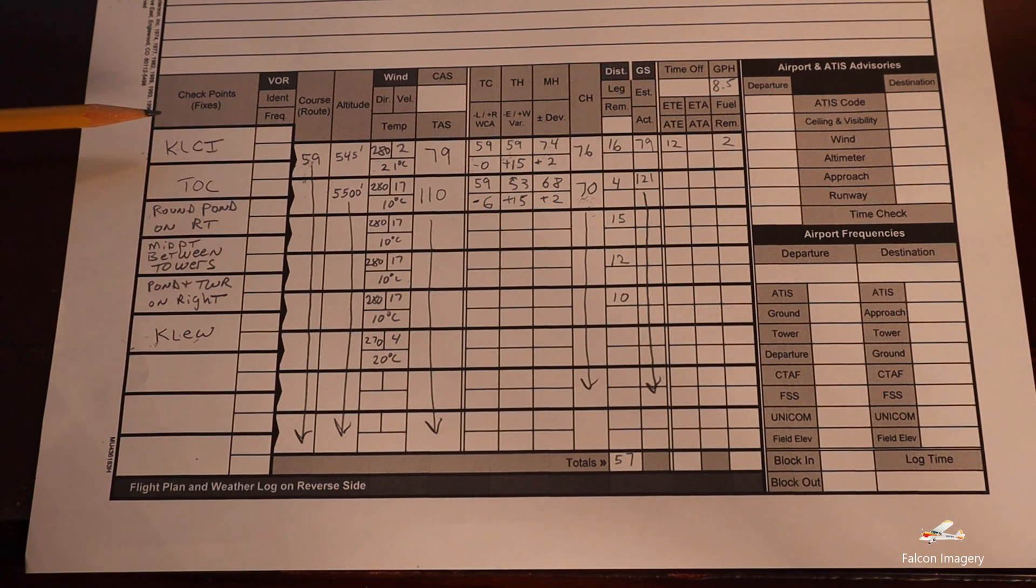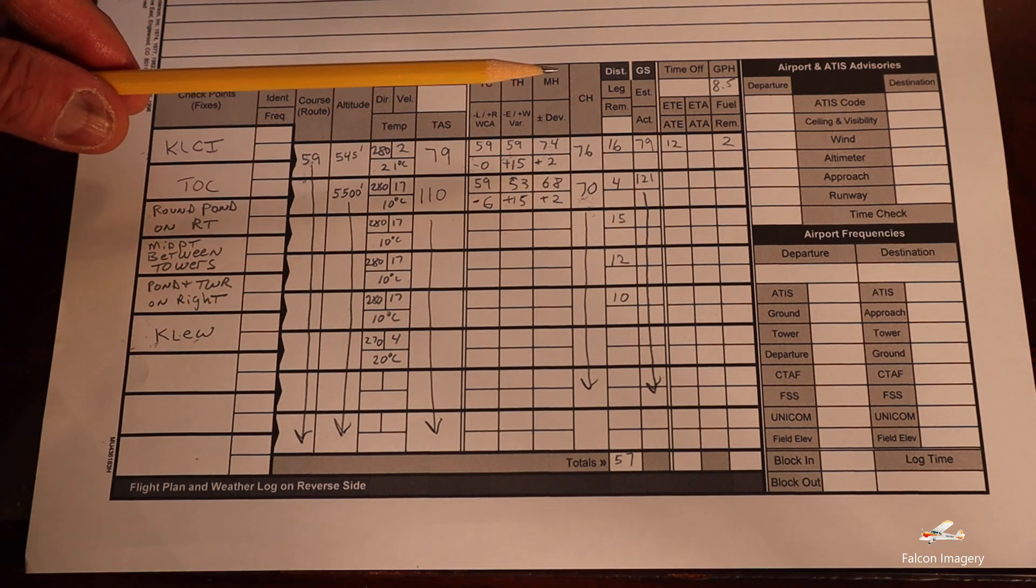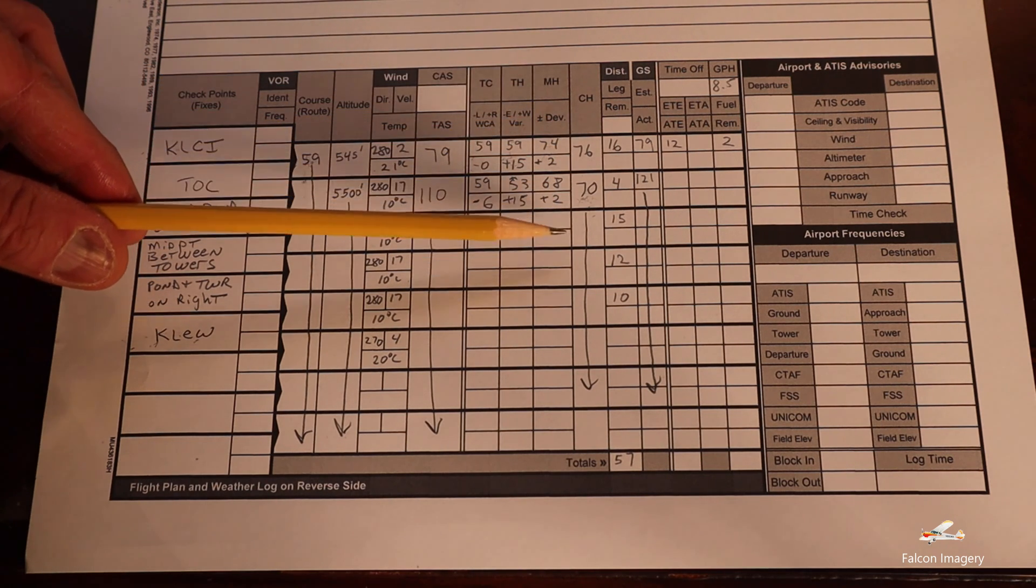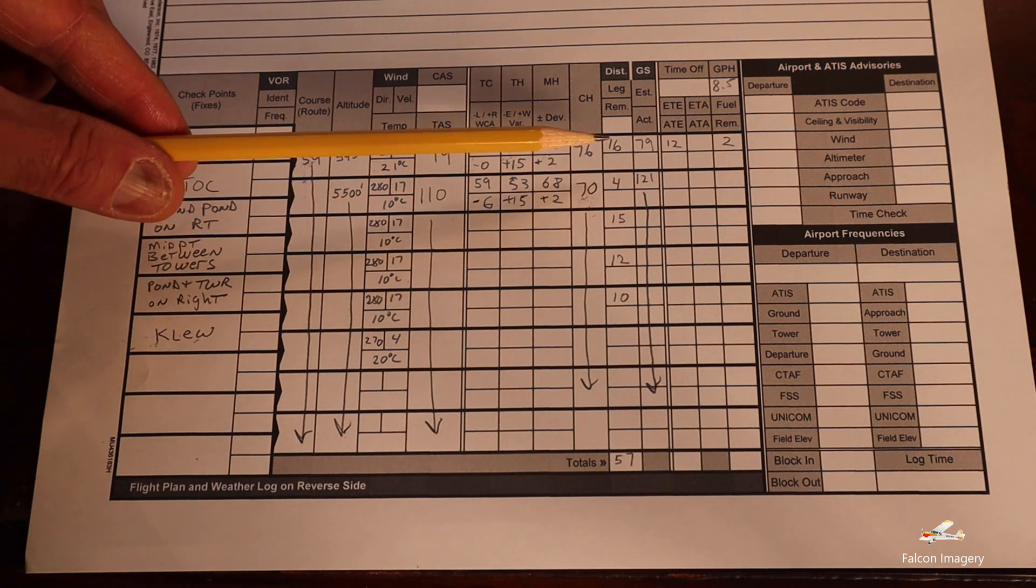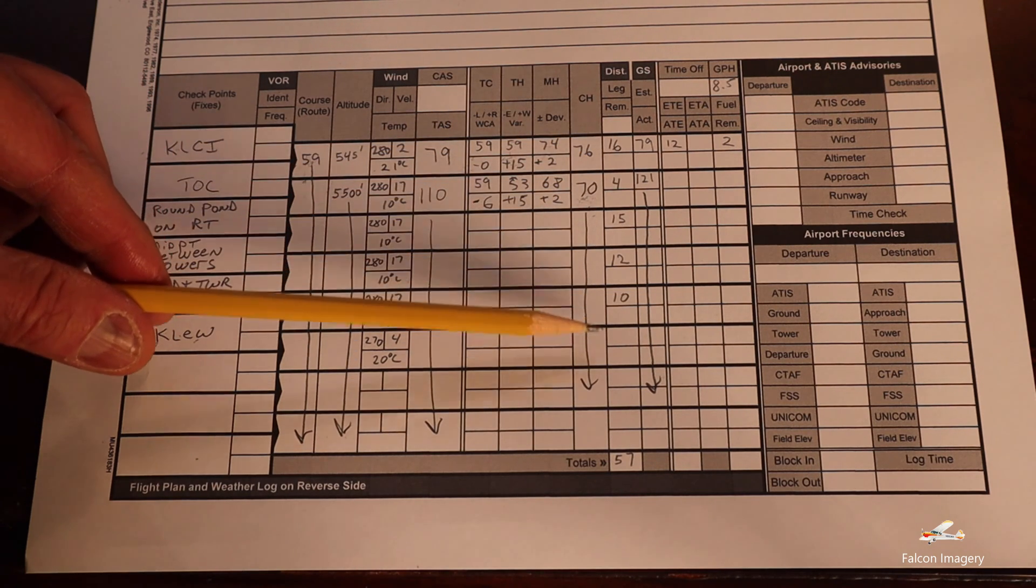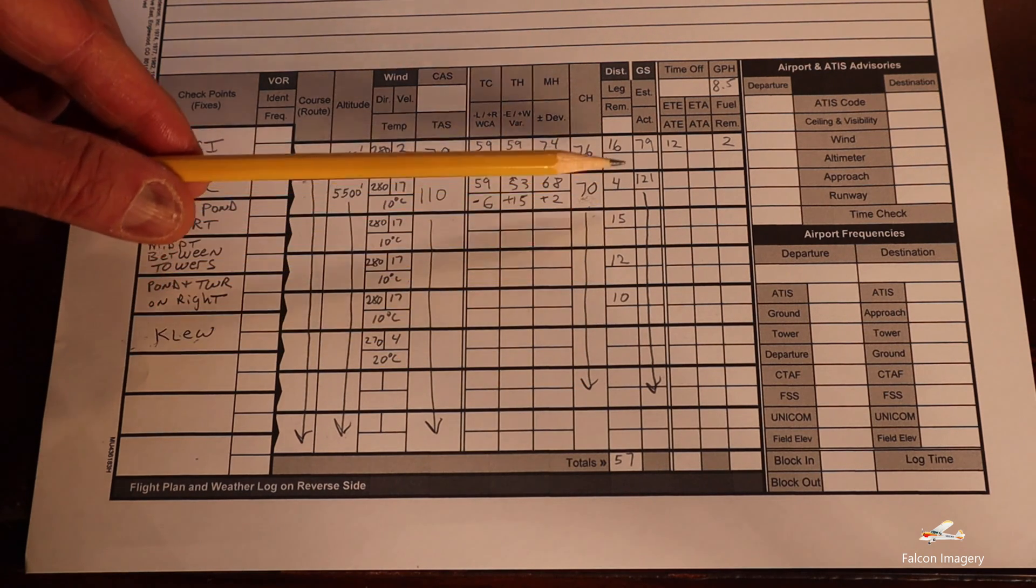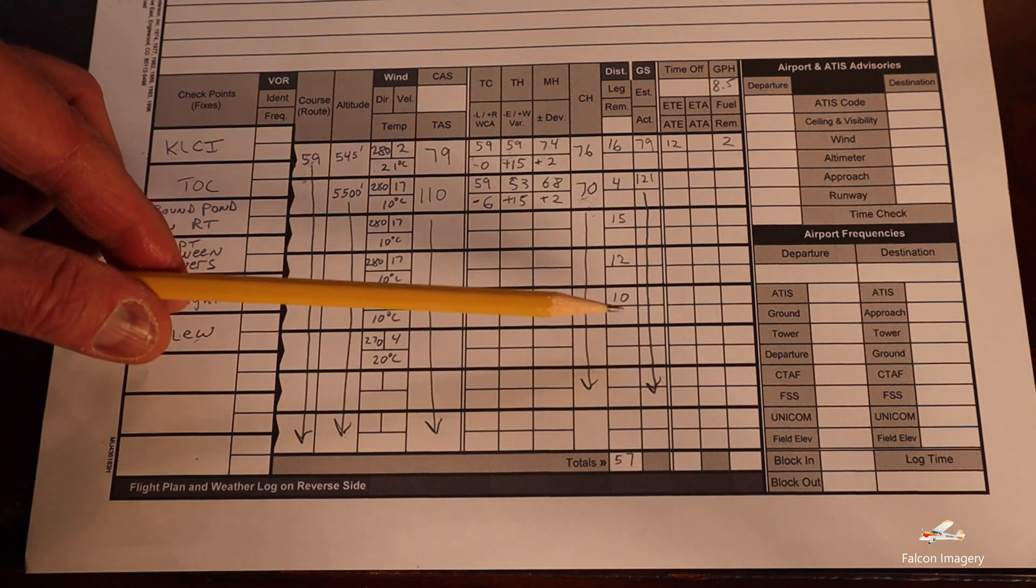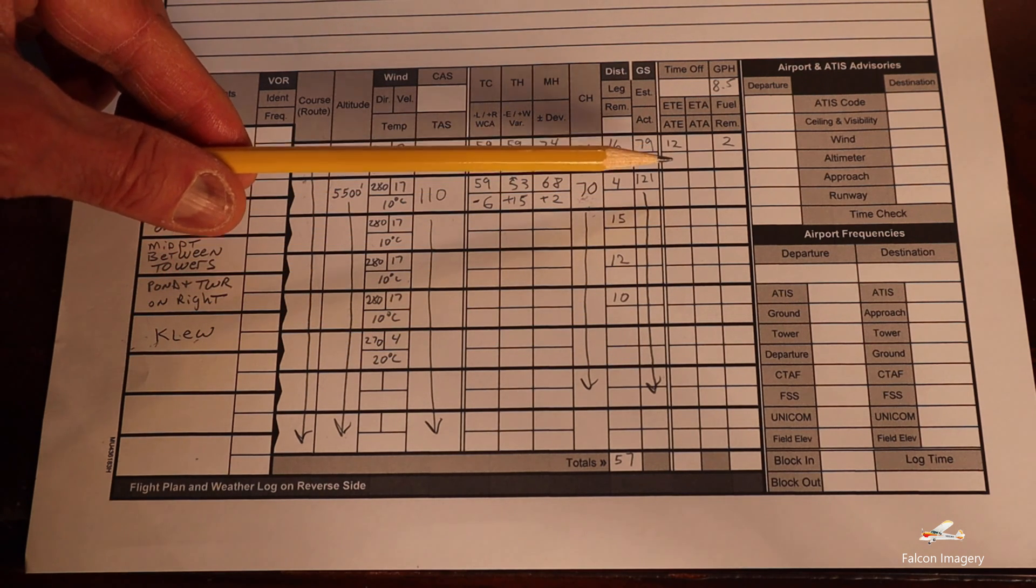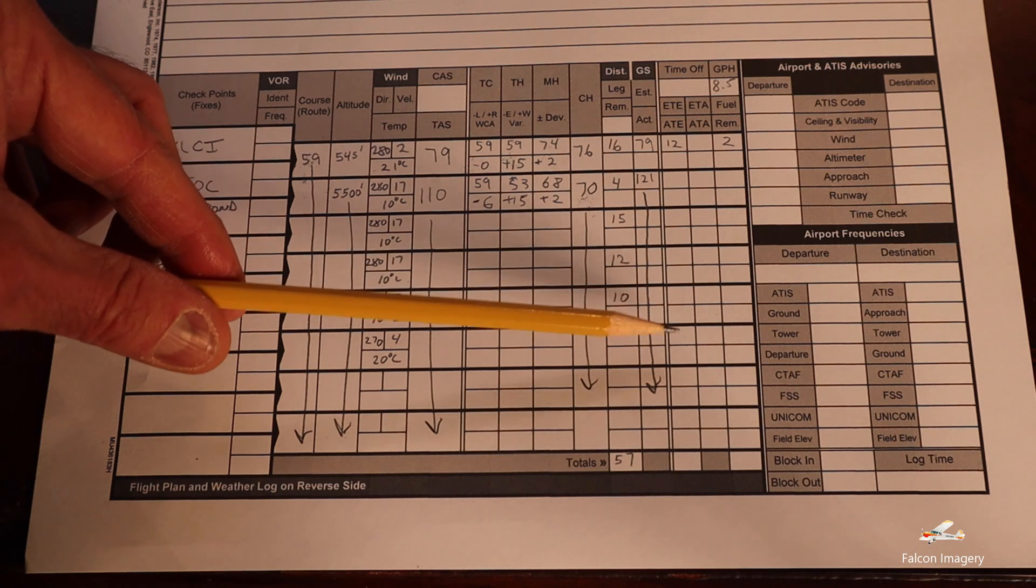In this scenario for our cross-country flight from Laconia Airport to Auburn Lewiston, Maine, we've already determined our course heading and the lengths of our legs along the route between waypoints, and we've determined our ground speed. What we need to do is determine our estimated time and route between the various waypoints.